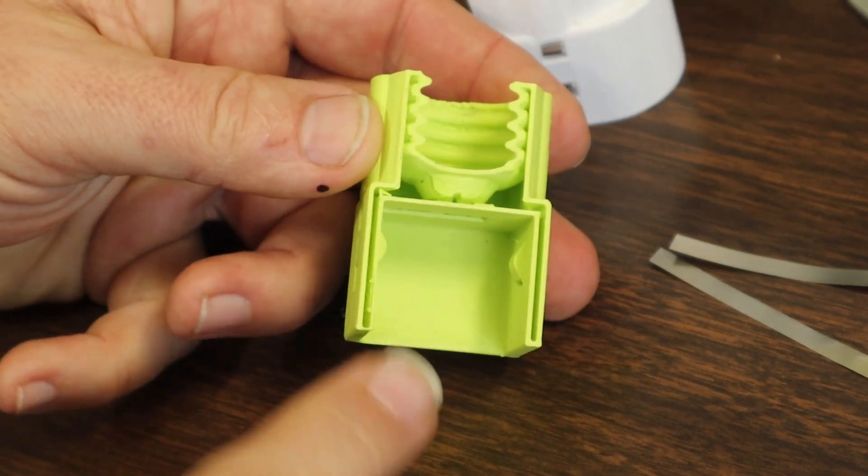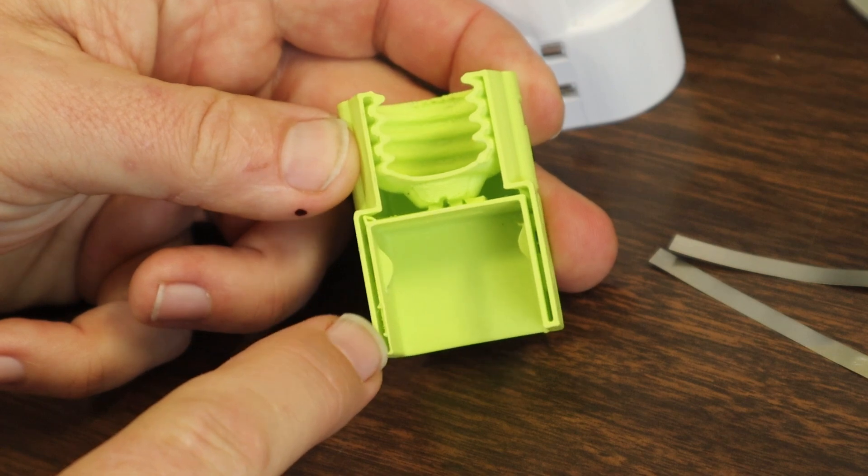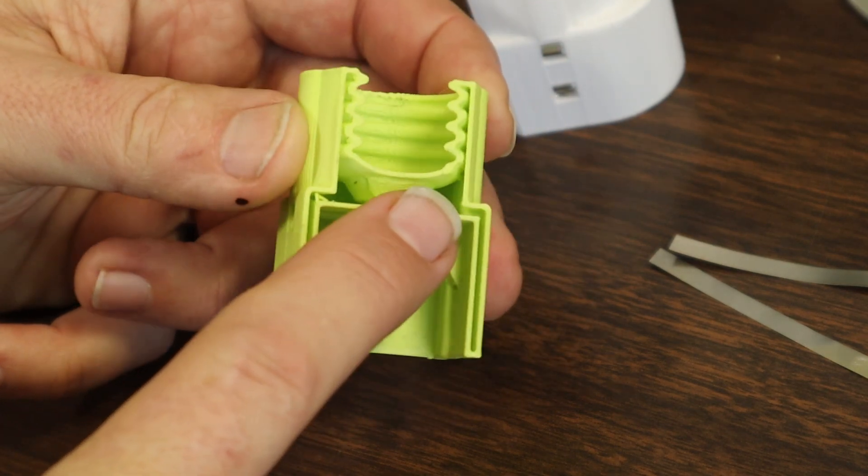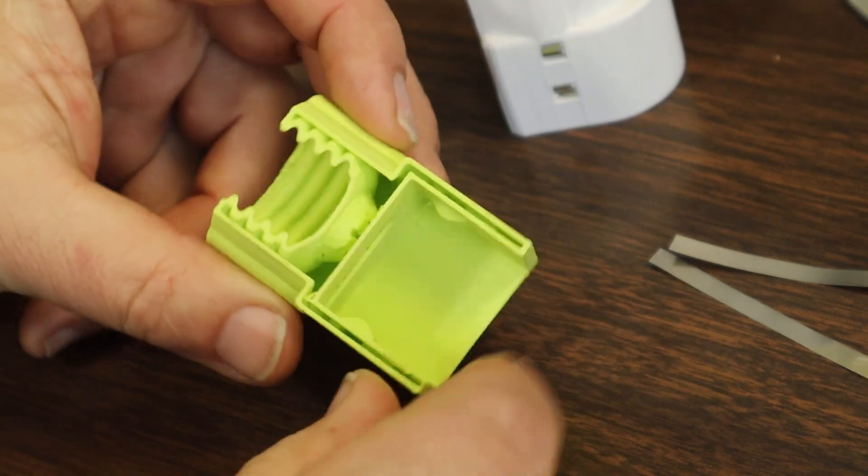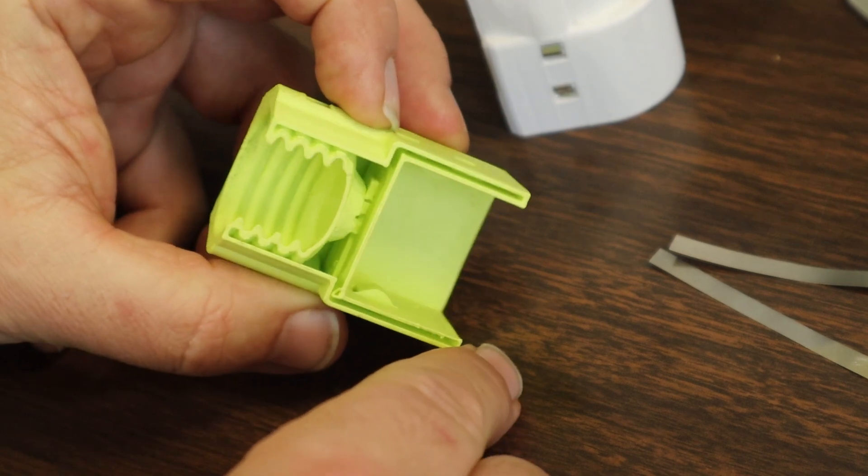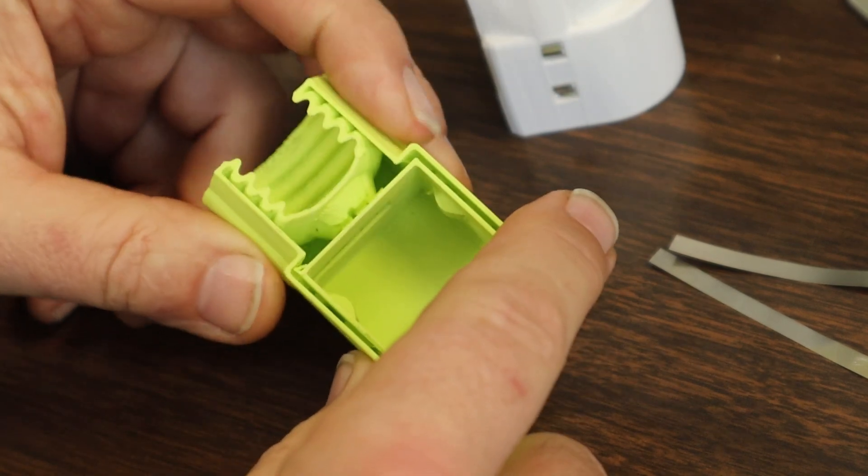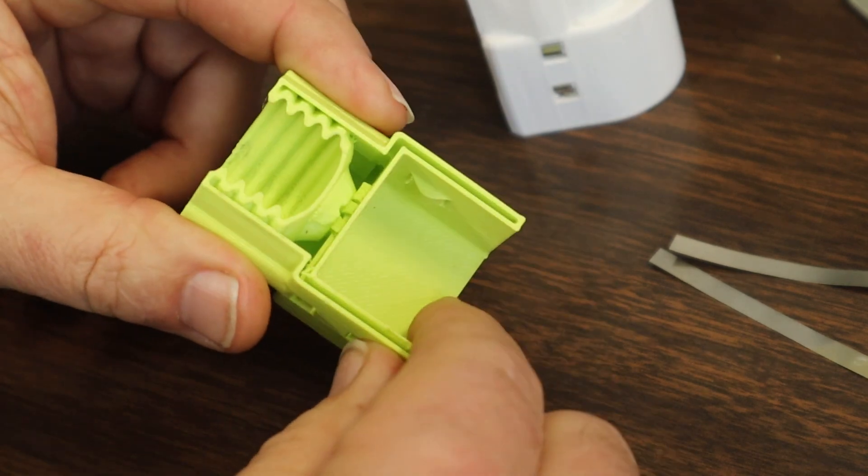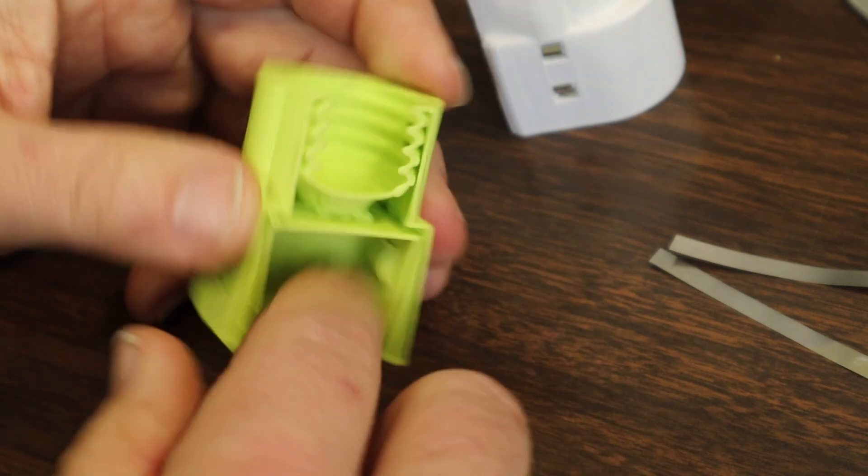So a couple of things you can see here. One is that essentially it's hollow. You know, I don't have any fill in any of these areas. The reason why I print it basically hollow is it does save a little bit of plastic and a little bit of print time, but it kind of gives it a little bit of a natural flexibility, which is a good thing.